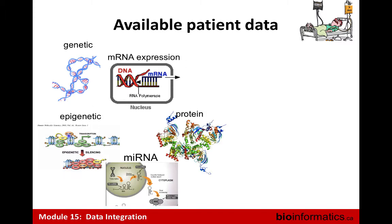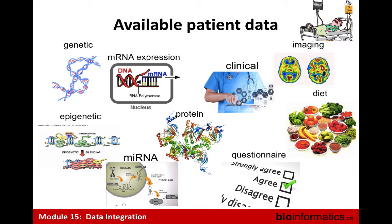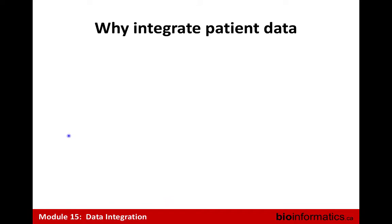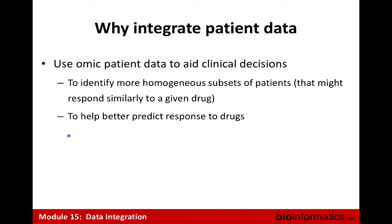There's so much different patient data, and it's a shame not to leverage all of it. One example that's been talked about is the Cancer Genome Atlas — they have all different kinds of data. Theoretically, it would be very useful to integrate this and understand what's going on at a meta level involving all of these different things, because they're all part of the same system. Why would we do this? To identify more homogenous subsets of patients — if you can cut your patients more ways, you can find smaller, homogenous subsets defined by similar methylation patterns or gene expression patterns. And also to help better do prediction.